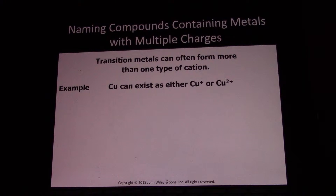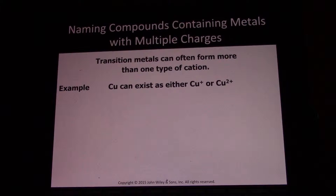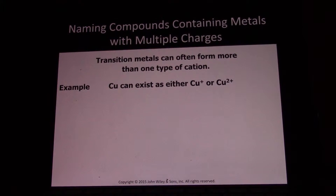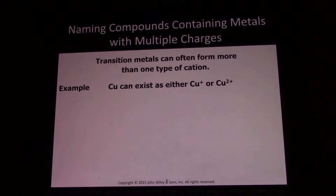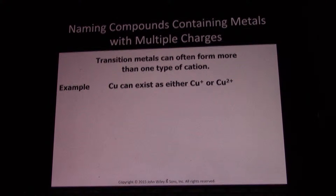Now we're going to look at cases in which the metal can have more than one charge. Copper can exist as either copper one or copper two. Basically all the transition metals except silver, zinc, and cadmium can have multiple charges. Silver is always plus one, and zinc and cadmium are always plus two, so they don't participate in this, but all the other transition metals do.